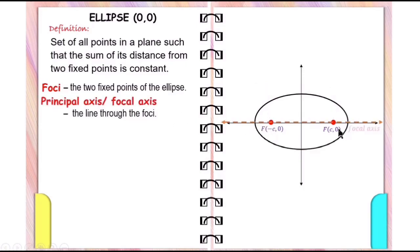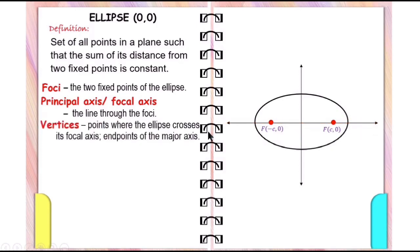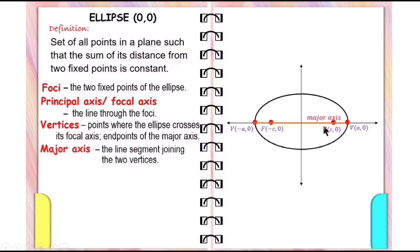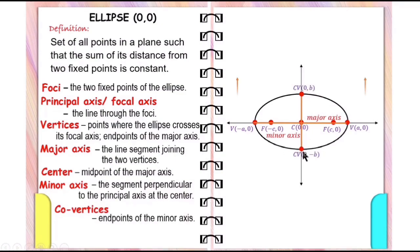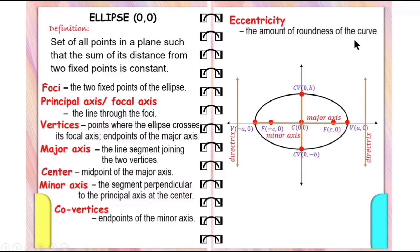The line through the foci is the principal axis or focal axis. Vertices are points where the ellipse crosses its focal axis; they are also the endpoints of the major axis. The major axis is the line segment joining the two vertices, and the midpoint of the major axis is the center. The segment perpendicular to the principal axis at the center is called the minor axis, and the endpoints of the minor axis are called co-vertices. These are the directrices of an ellipse.